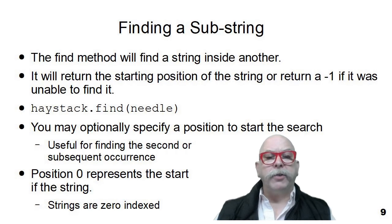Python's strings and Python's lists that we'll see in subsequent chapters are zero indexed. So position zero represents the start of the string. You can optionally also specify positions in the find for finding the second or subsequent occurrence of a string, but I didn't include that in this slide. You can look it up in the documentation.